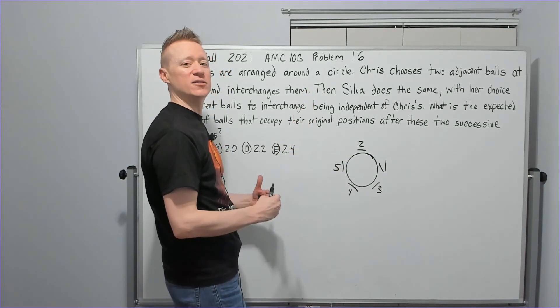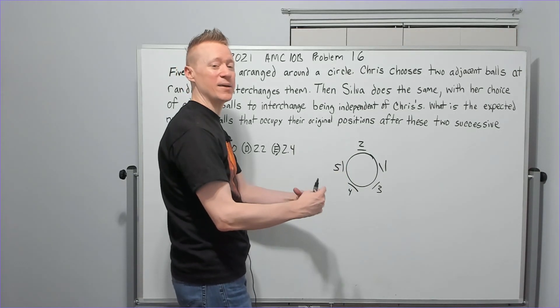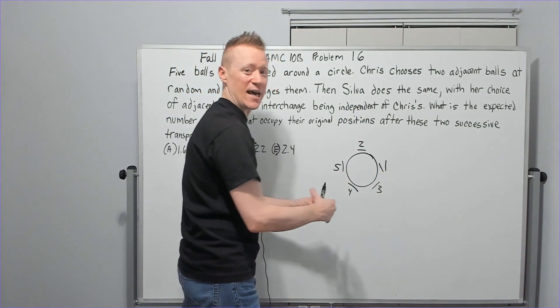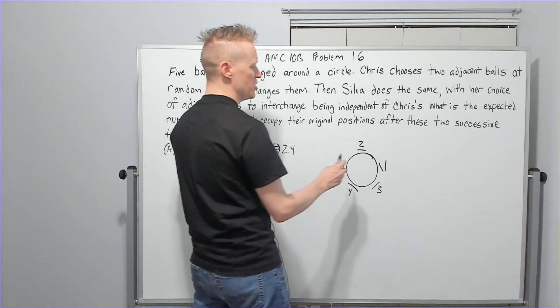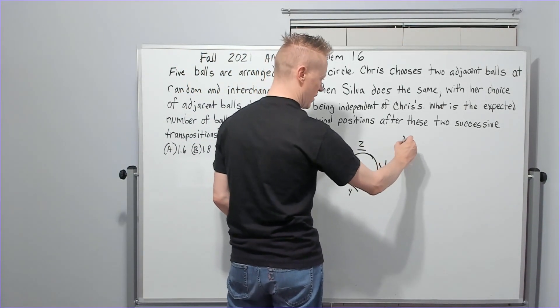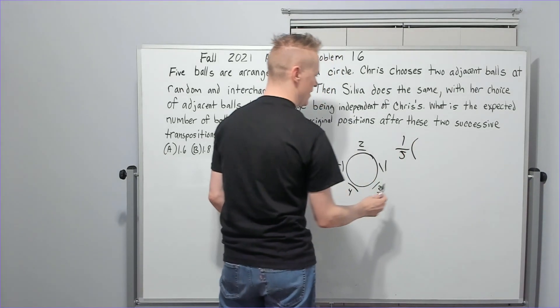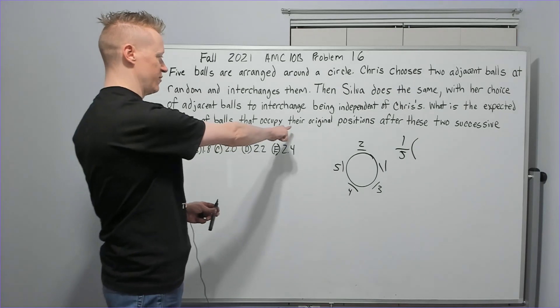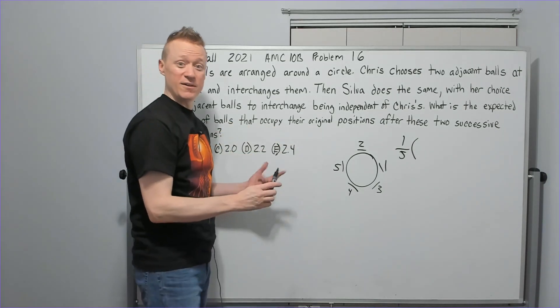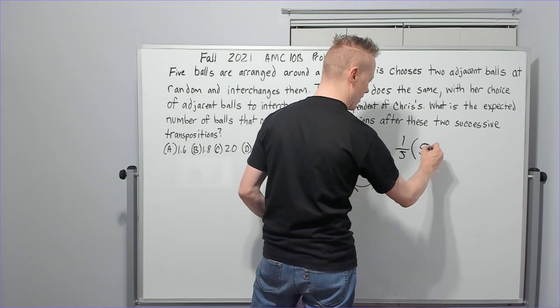An expected value is the probability of an event happening times the value of that event, and you add it all up for all the probabilities with all the events. So if she does that one, there's a one in five chance, then that would put all five back in place, and that would be the number of balls that occupy would be five. So the value of that outcome is five.